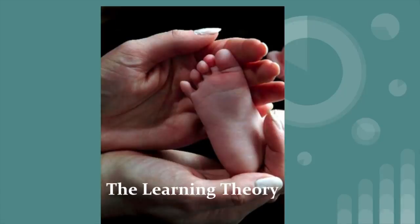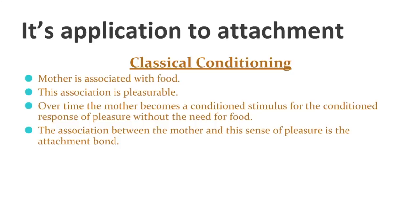Next is the first of the two theories of attachment: the learning theory, otherwise known as the behaviourist theory. This gives you a chance to recap classical and operant conditioning from the approaches topic, but importantly in this section you apply that to attachment. What students often do is talk about Pavlov and his dogs — but you don't get many marks for that. You need to talk about children, food, their mothers and caregivers. The first part of the theory links to classical conditioning — learning through association.